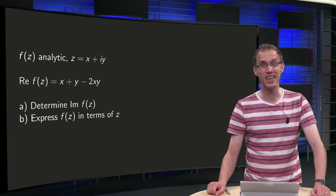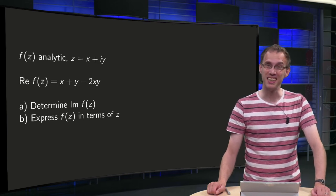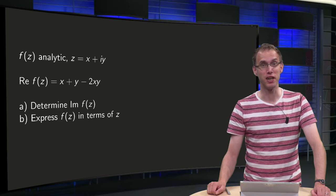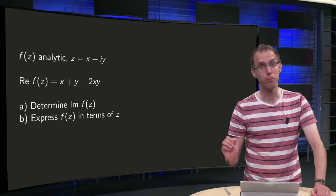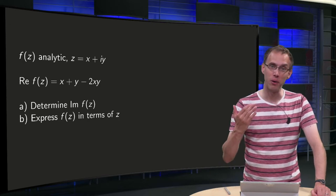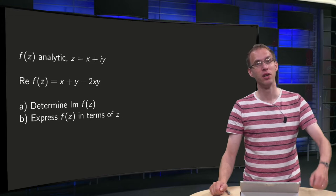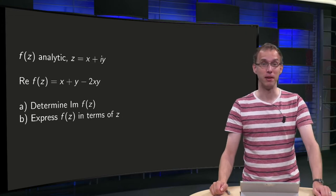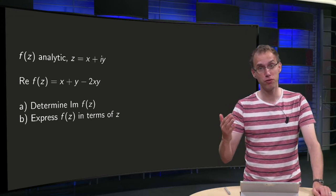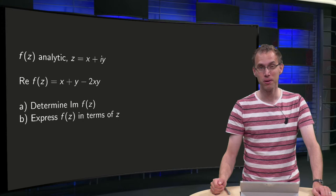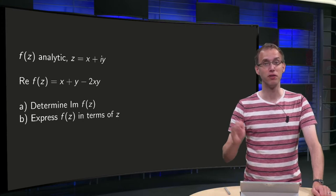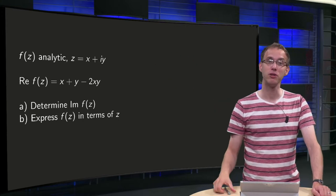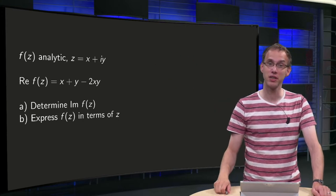If a complex function is analytic, only the real part already specifies the full function, up to a constant. So given the real part, you can find the imaginary part and thus also the full function. Try this with the following example and then use the video to see whether you did this correctly.